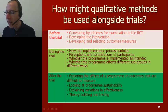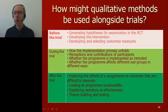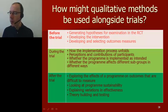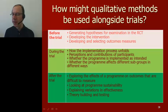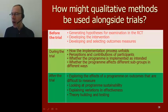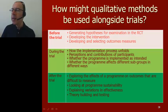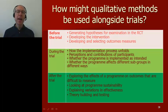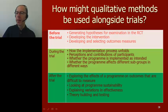After a trial, qualitative methods can be useful in exploring the effects of a program on outcomes that are difficult to measure quantitatively, such as the effects of health interventions on social networks. They can also explore the reasons for differential effects across different groups or sites — for example, why a smoking reduction program has more impact among high-income than low-income groups. Finally, qualitative methods can help develop models to explain the mechanisms of intervention effect, such as the pathways through which a nurse training program impacts clinical practice.